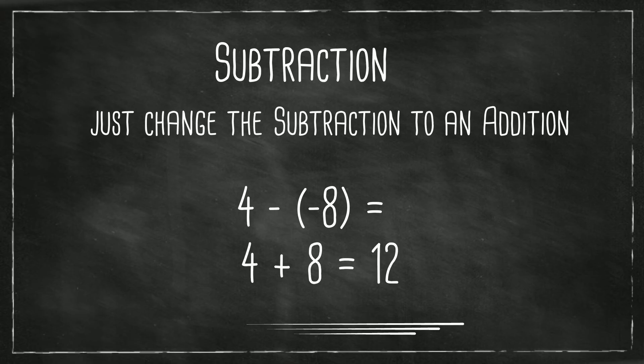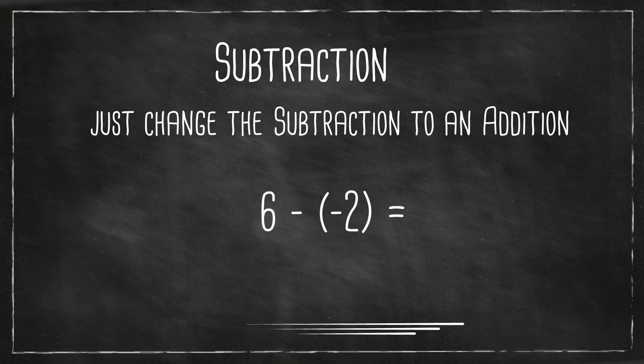So it becomes 4 plus 8 equals 12. 6 minus a negative 2 becomes 6 plus 2 which equals 8. 3 minus a negative 9 becomes 3 plus 9 which equals 12.